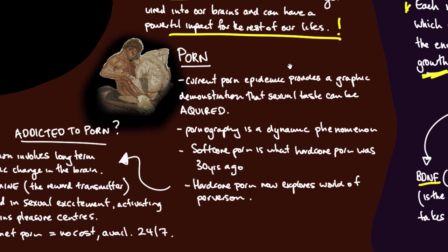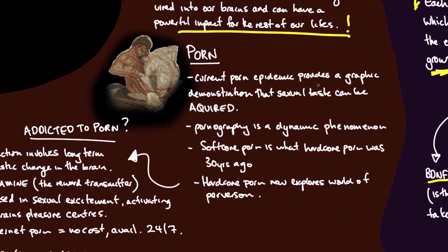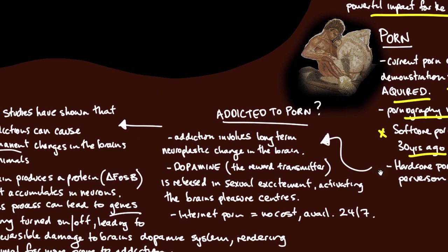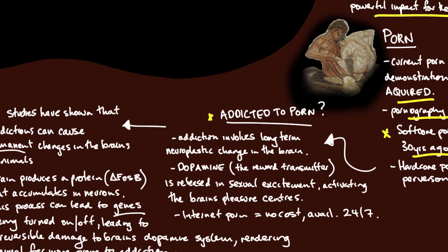The author talks a little about porn. The current porn epidemic provides a graphic demonstration that sexual tastes can be acquired, and that pornography is a dynamic phenomenon. You just have to look at where softcore porn is now - it's what hardcore porn was 30 years ago. And hardcore porn now explores the world of perversion. So it's a dynamic phenomenon. The author explores addiction to porn. Addiction involves long-term neuroplastic change in the brain. That's any kind of addiction, not just to porn.